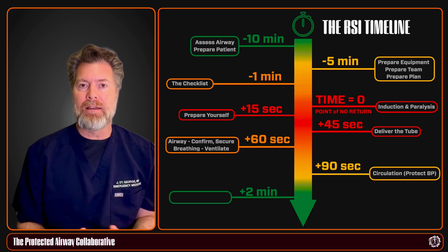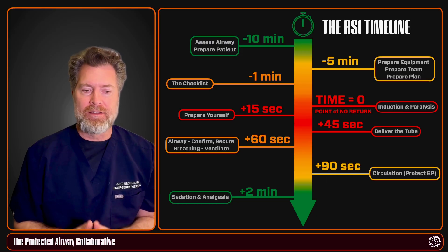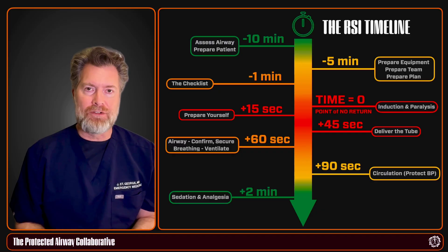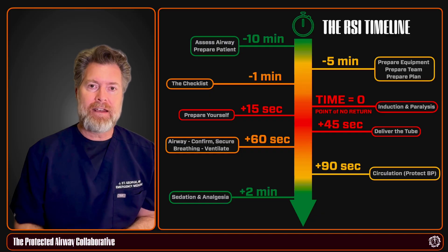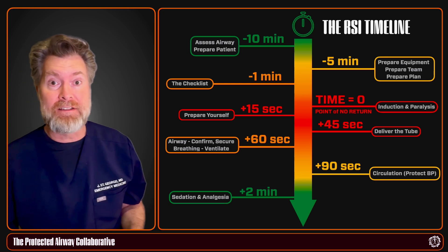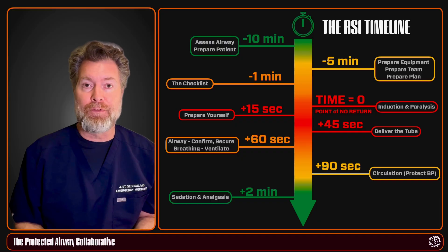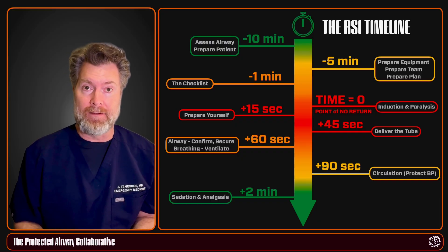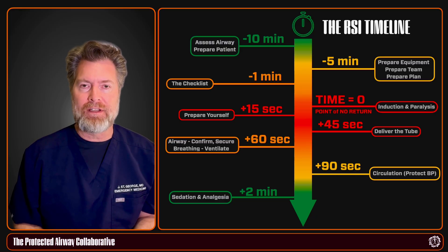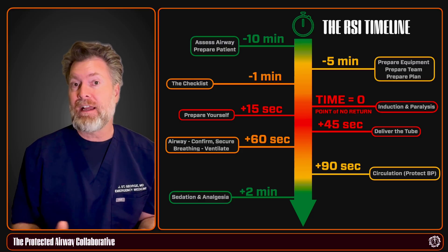Once you've addressed any hypotension or hemodynamic issues, move on to sedation and analgesia — this is absolutely essential. You've given rocuronium which could last 45 minutes, while the induction sedative wears off after five or six minutes. You do not want your patient to be awake and feeling the discomfort of being on a ventilator with a tube in the trachea. Make sure whatever you're giving — fentanyl, propofol, or otherwise — is ready and being delivered within just a couple of minutes of intubation.